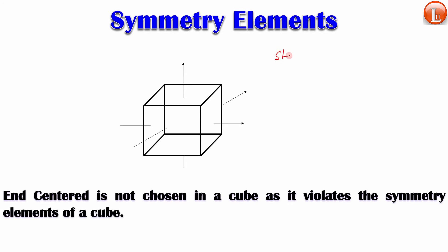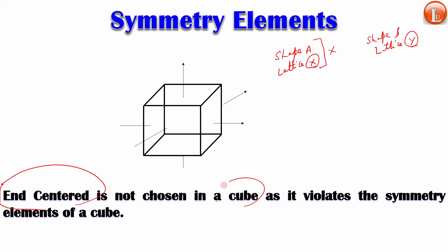So, back to our original example: shape A with lattice X, and shape B with lattice Y. First he checked whether X can exist in A and Y can exist in B. Case one: if X does not exist in A — just like n-centered does not exist in a cube because it violates symmetry — he automatically chose shape B with lattice Y, and coincidentally found that whenever such a situation happened, Y was always working with B without violating any symmetry element.